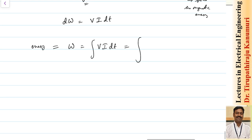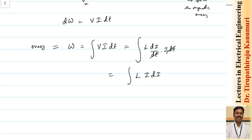Substituting v = L·di/dt, the energy becomes the integral of L·(di/dt)·i·dt. The dt terms cancel, giving the integral of L·i·di. With current ranging from 0 to I, integrating gives the energy stored as ½·L·I².